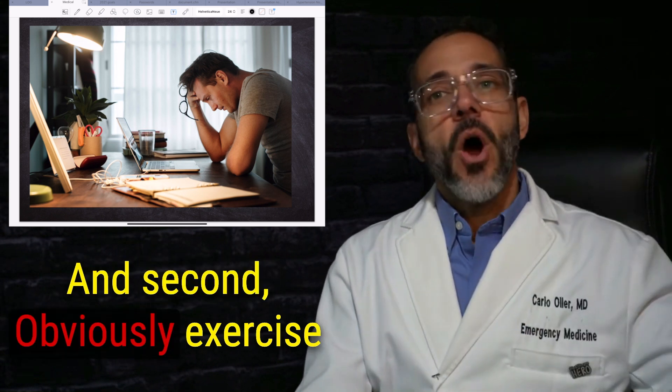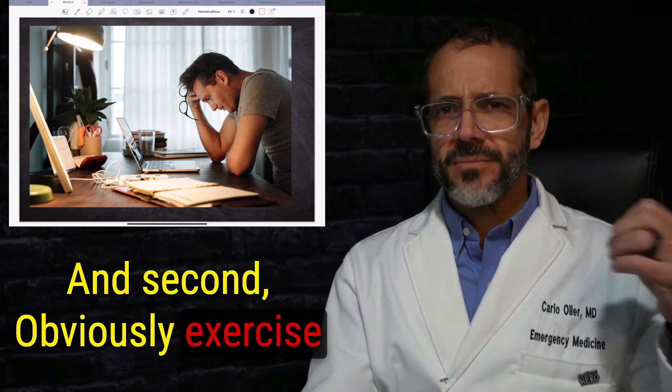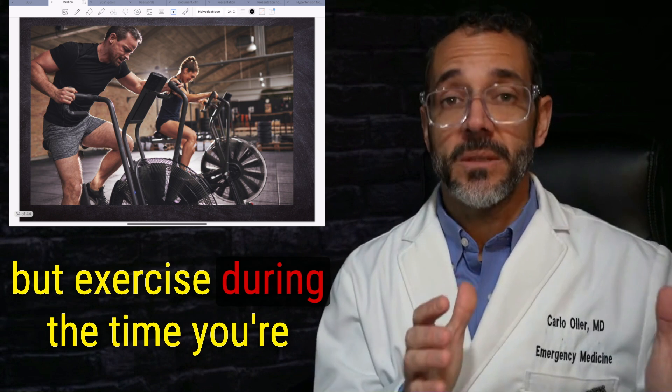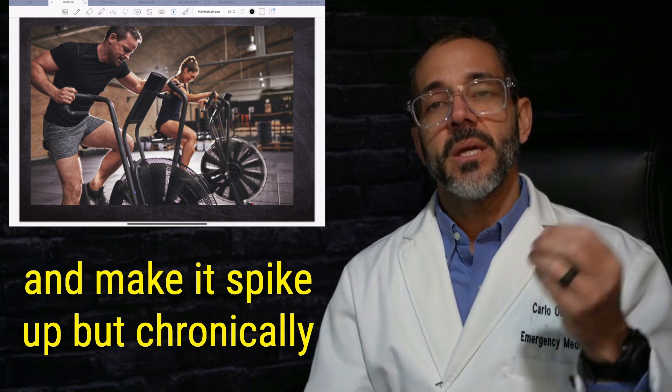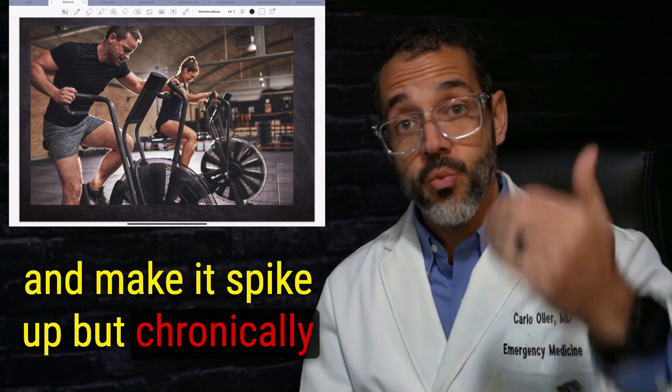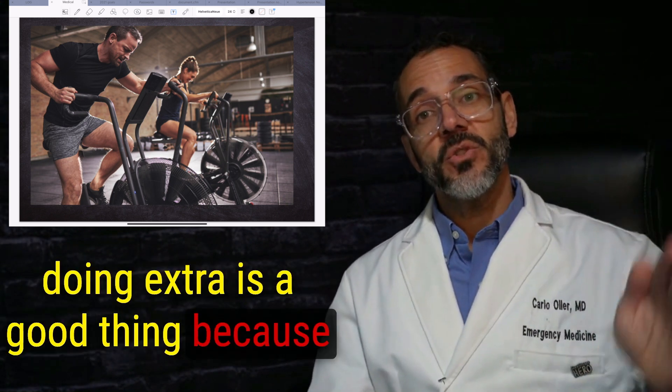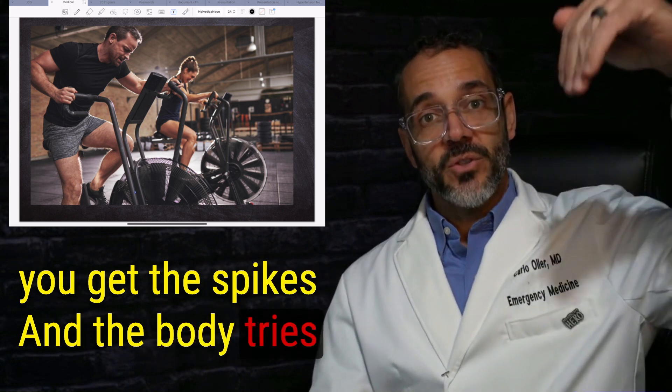And second, obviously exercise. But exercise during the time you're doing it, the stress on your body will elevate your heart rate and will increase your blood pressure and make it spike up. But chronically doing exercise is a good thing because you get the spikes and the body tries to bring it down.